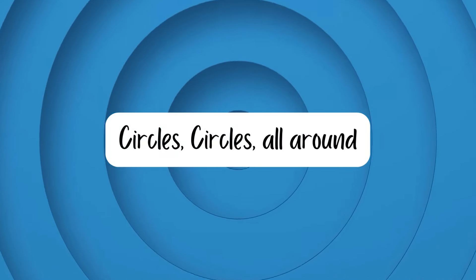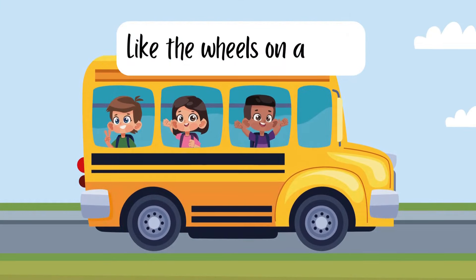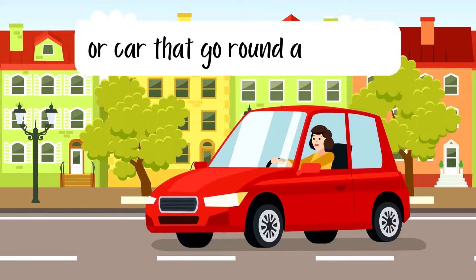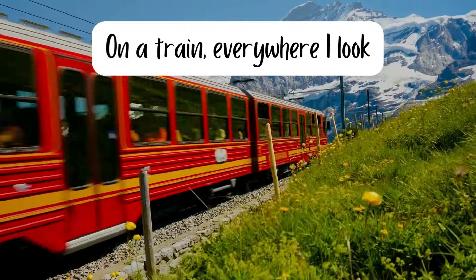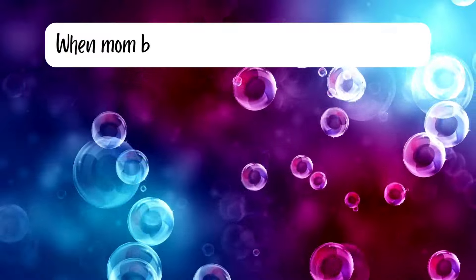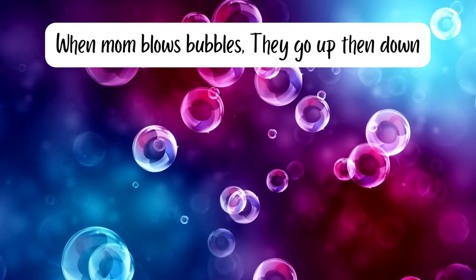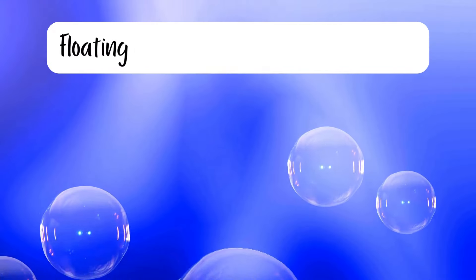Circles, circles all around like the wheels on a bus or car. They go round and round on a train everywhere I look. When mom blows bubbles they go up and down, floating in the air.